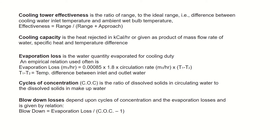Before measuring the performance of a cooling tower, I will explain some important terms. The first is cooling tower effectiveness, which is the ratio of range to the ideal range — that means the difference between the cooling water inlet temperature and the ambient wet bulb temperature. Effectiveness is calculated using the formula: effectiveness equals range divided by (range plus approach).